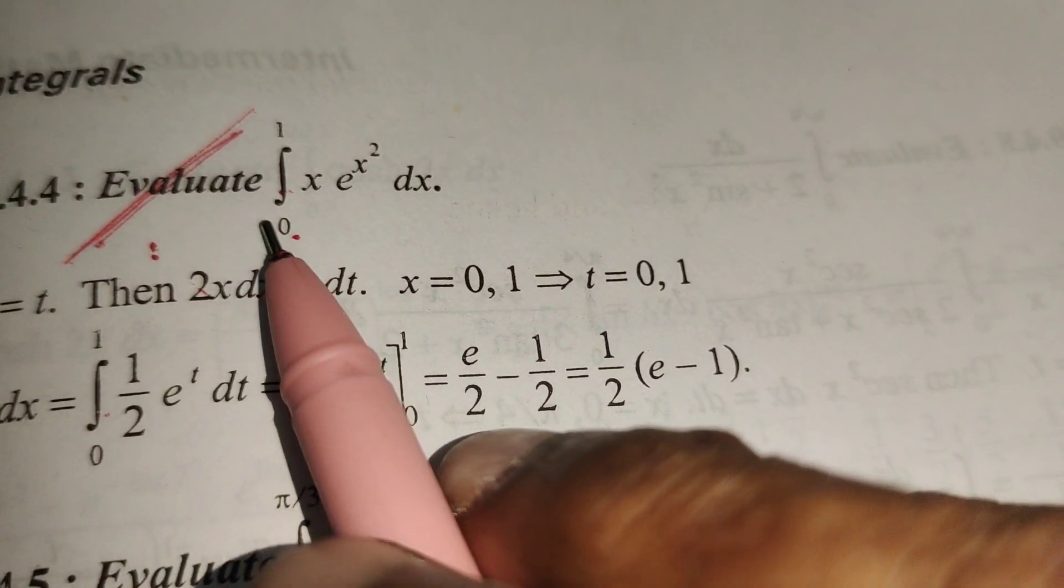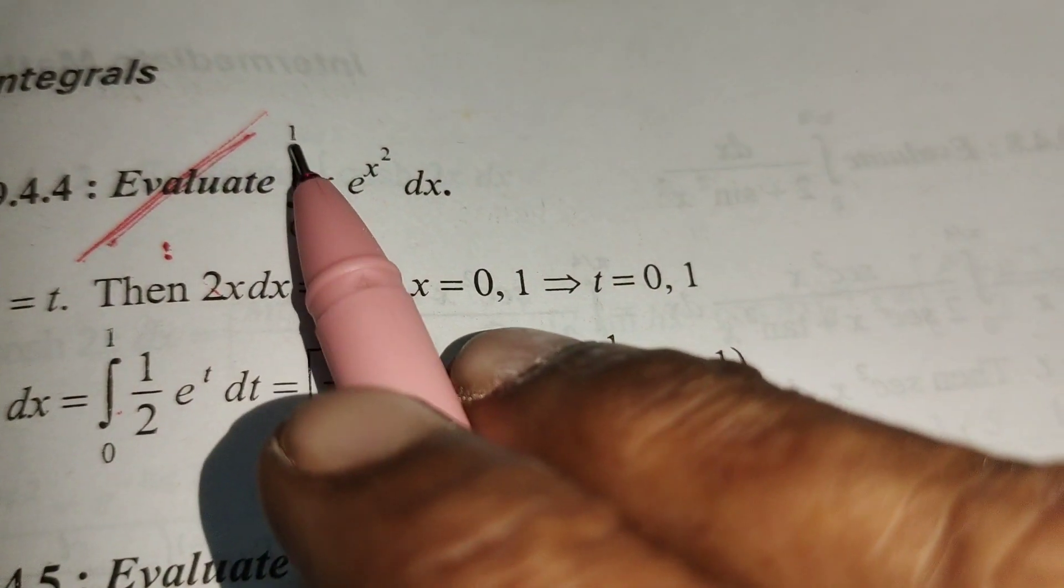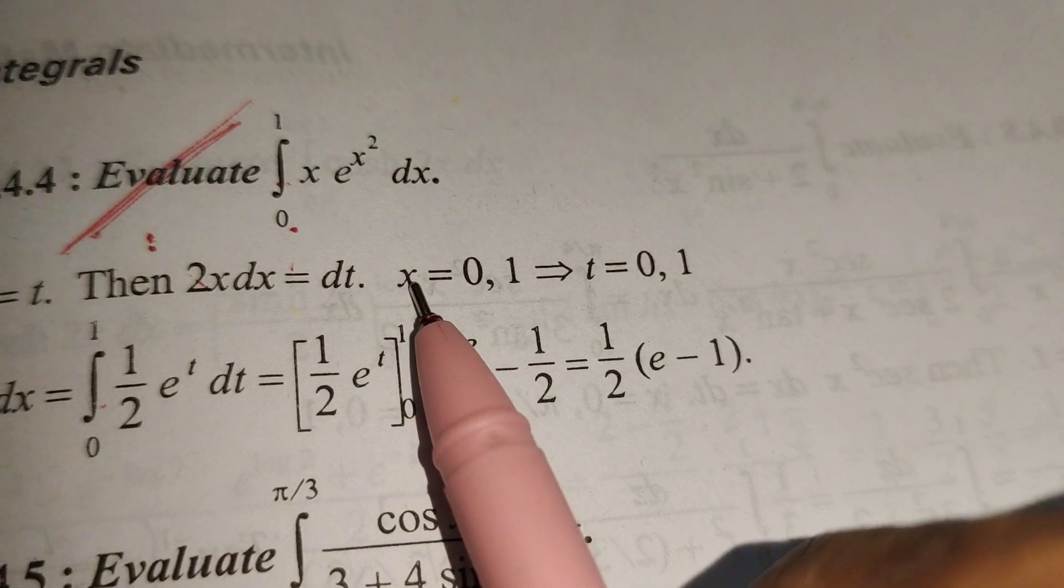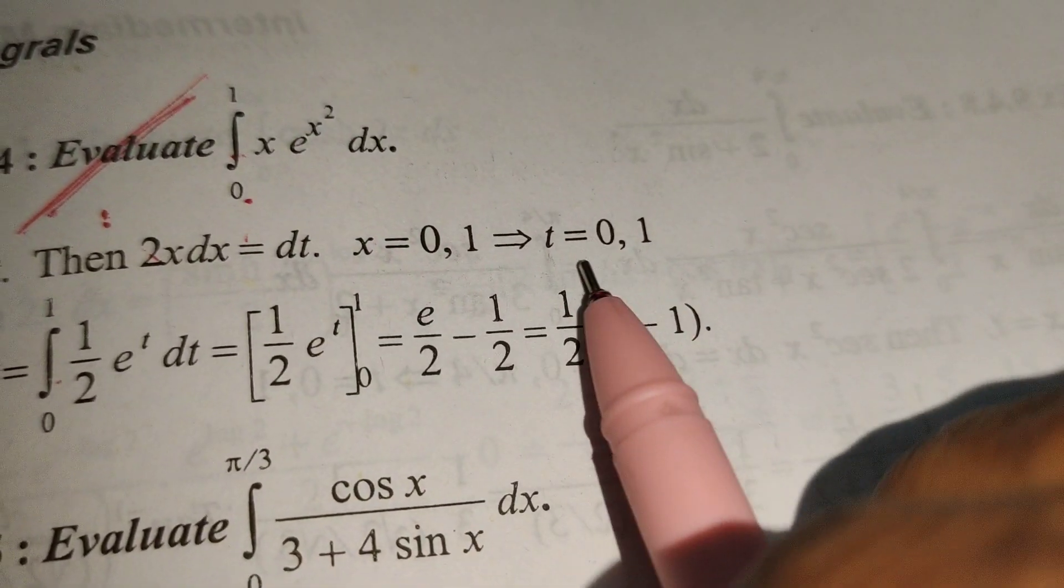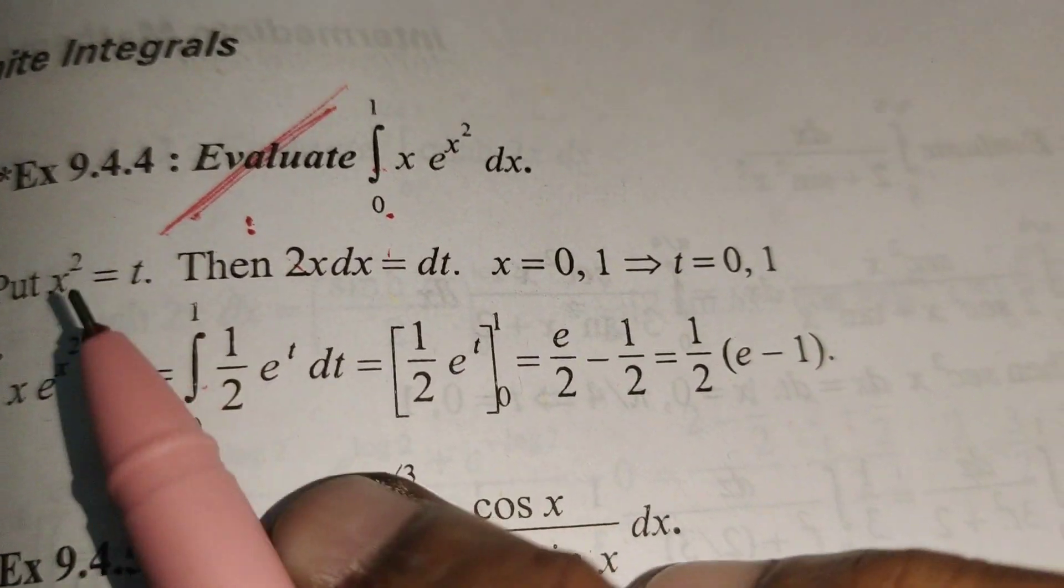Then the limits also change in terms of t. When x = 0, 1, in terms of t we also get 0, 1.